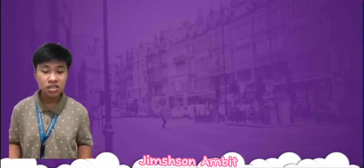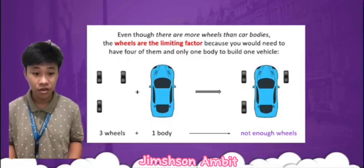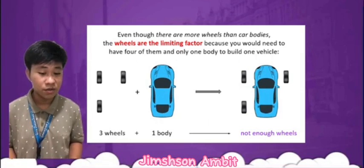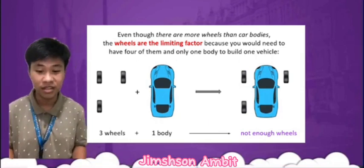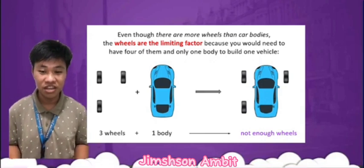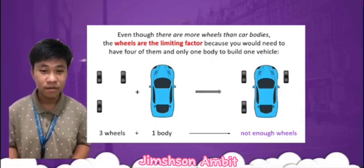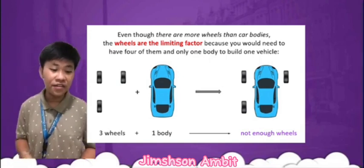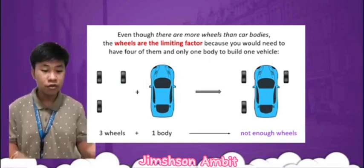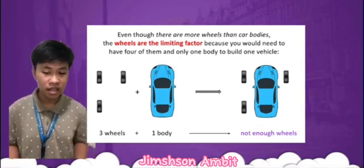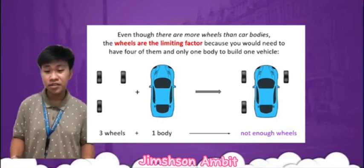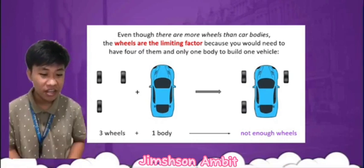Another way to think about limiting reagents is to imagine that you're building a car. When building a car, you need four tires and also two headlights. If you only have four tires, then you can only build one car. Even if you have two headlights, the tires are the limiting reagent in this reaction because they will determine how many cars you can build.